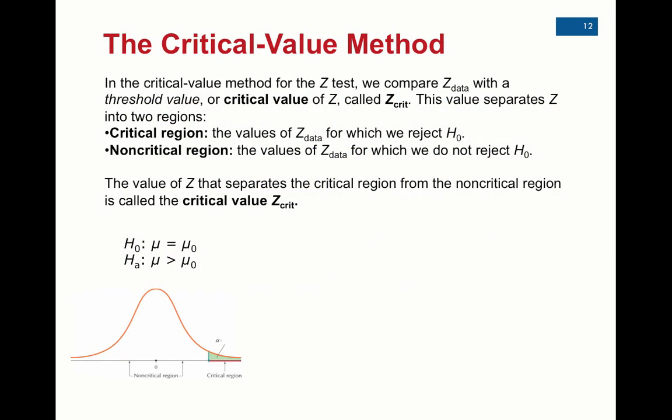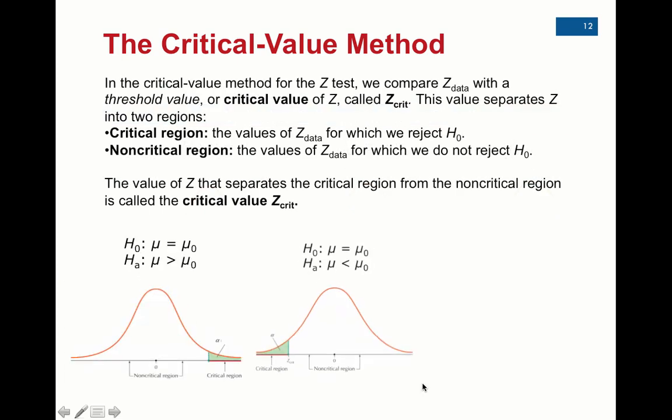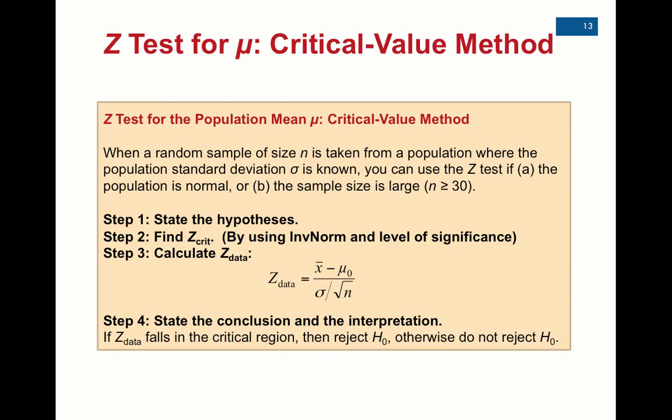Now with the critical value method, we have what we see as what is a far enough distance that we would reject the null. Now you see the number, and you know once you compute Z-data that you'll be able to compare the two based on the right-tail, left-tail, or two-tail, and make this rejection conclusion, or fail to reject. So that's the steps. We'll see you in class.